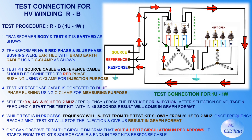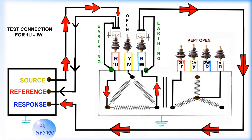For the HV winding R-to-B test connection: the transformer body and test kit are earthed. The transformer HV red-phase and blue-phase bushings are earthed with bright earthing cables using C clamps. The source and reference cables are connected to the red-phase bushing using a C clamp for injection, and the response cable is connected to the blue-phase bushing for measurement. Select 10 volt AC and 20 Hz to 2 MHz, then start the test kit. Within 40 seconds the result comes in graph format. The frequency circulates as shown by the red arrows in the circuit diagram, from the source cable to the response cable.